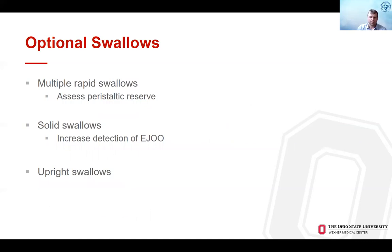Optional swallows that can be added include a multiple rapid swallow test to assess peristaltic reserve. Solid swallows can sometimes help identify patients with EGJ outflow obstruction if they have intact peristalsis but elevated lower esophageal pressures with poor bolus transit. Upright swallows can also help get a sense of what bolus transit and propagation look like under more typical circumstances compared to supine swallows.